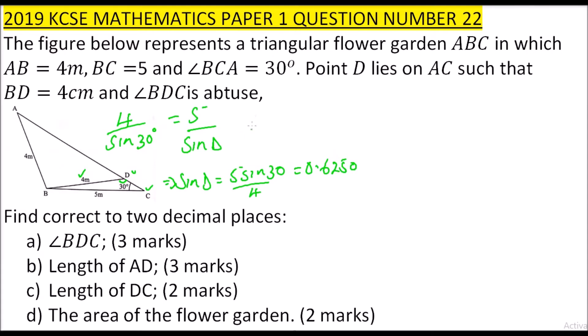So you get the sine inverse of 0.6250, which gives you 38.68 degrees. But we have been told that D is obtuse, that is an angle greater than 90, and since in the second quadrant sine is positive, this means that the angle D is in the second quadrant which is obtuse. So it is equal to 180 minus 38.68, which will give you 141.32 degrees. So that is the angle D, and that is how you get it.